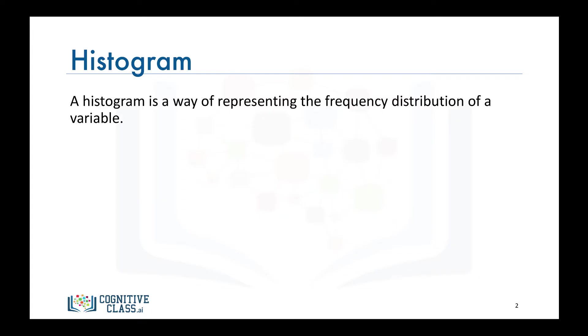It then counts the number of data points that have been assigned to each bin. So the vertical axis is actually the frequency, or the number of data points in each bin.